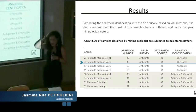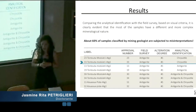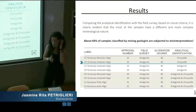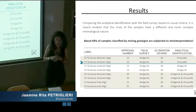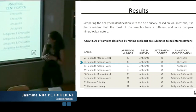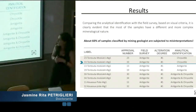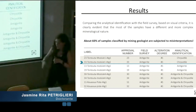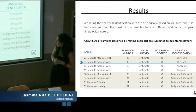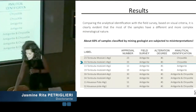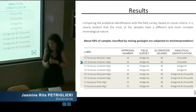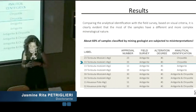The results show that about 60% of samples classified by mining geologists are subjected to misinterpretation. Comparing analytical identification with the field survey, which is based on visual and morphological criteria, it is clearly evident that most samples have a different and more complex mineralogical nature. I report in the table specimens identified by geologists of mining companies as antigorite degree of alteration number one, but most of those samples are mixed-phase antigorite–chrysotile, and two samples recognized as antigorite are actually chrysotile.